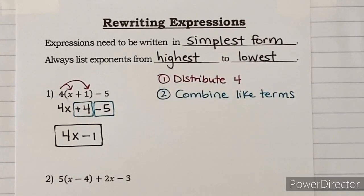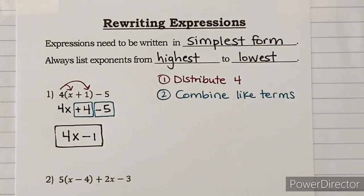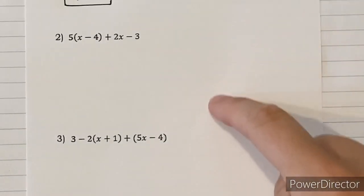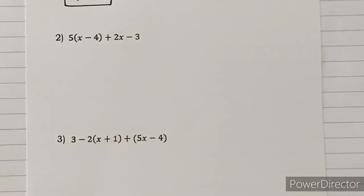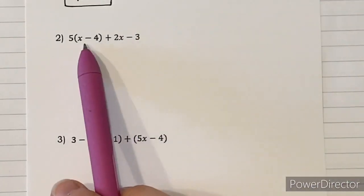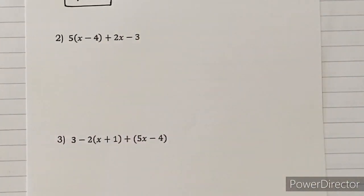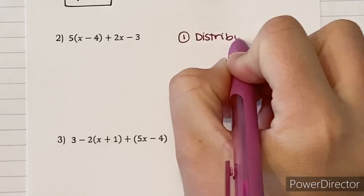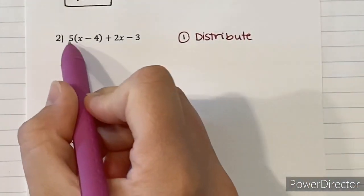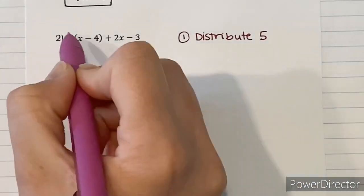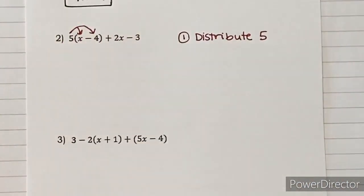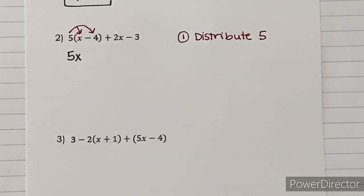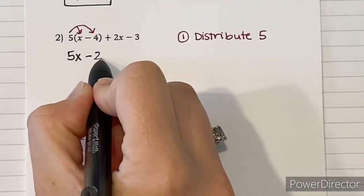Pretty easy! Now let's do number two together. We're going to write down the steps needed to get there. The first thing I see are parentheses, and like before, the only way to get rid of them is to distribute whatever number is in front — in this case, a five. So we distribute: five times x is 5x, and five times negative four is negative 20.